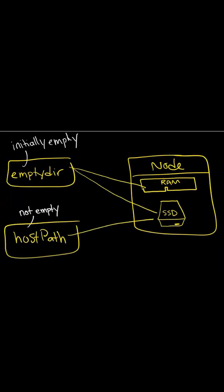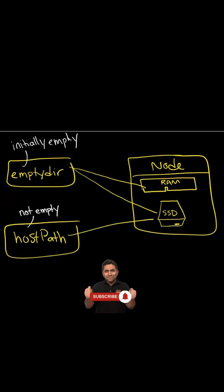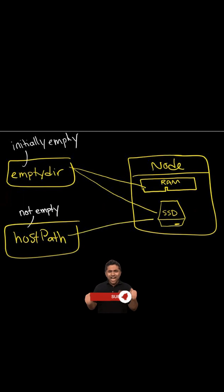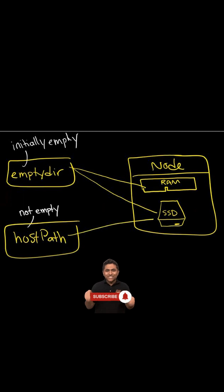Kubernetes supports several types of volumes. The first is emptyDir: it is a type of volume that is created when the pod is first hosted on a node, and once the pod is removed from the node, the data in the emptyDir is also deleted. The second is hostPath: this type of volume mounts a file or directory from the host node's filesystem into a pod.